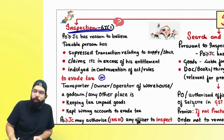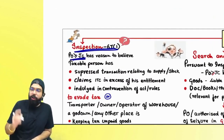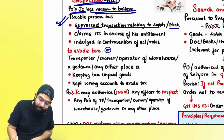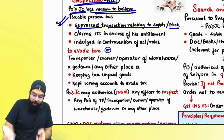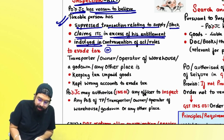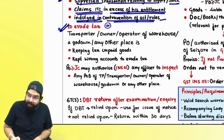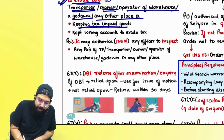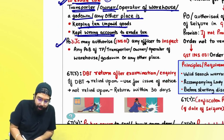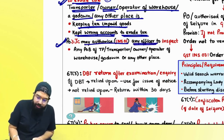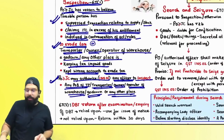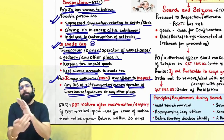Section number 67, subsection 1 covers inspection. If a proper officer, greater than or equal to joint commissioner, has reason to believe that a taxable person has suppressed transactions relating to supply or stock, claimed ITC in excess of entitlement, or indulged in contravention of the act or rules to evade tax, then the proper officer may authorize — in GST INS 01 — any subordinate officer to go and inspect the place of business. Who can direct an inspection? Proper officer greater than or equal to joint commissioner.